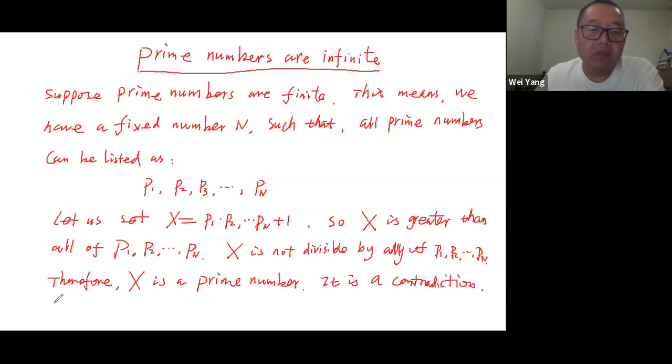So our supposition is wrong. Therefore, prime numbers should be infinite.